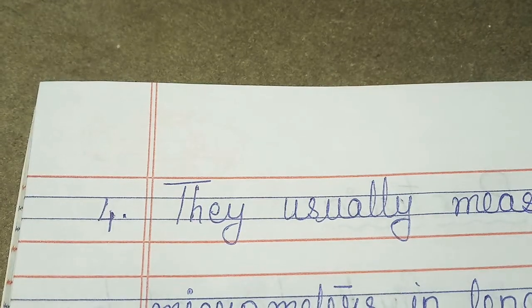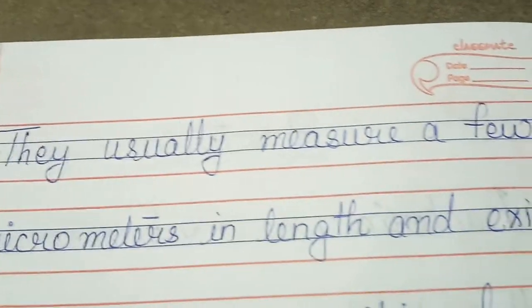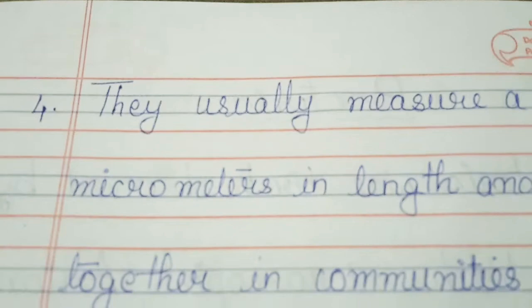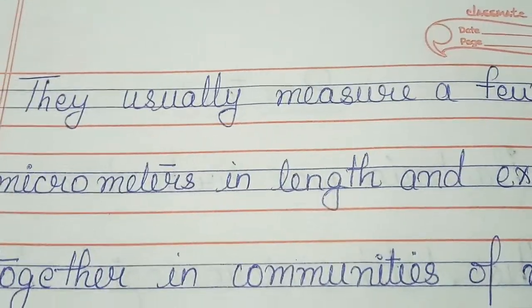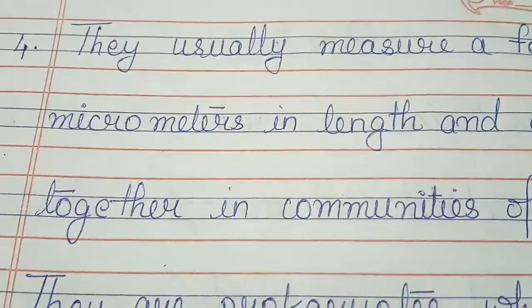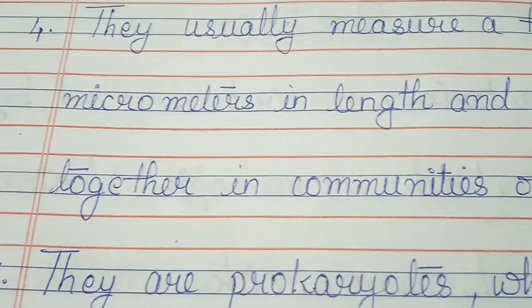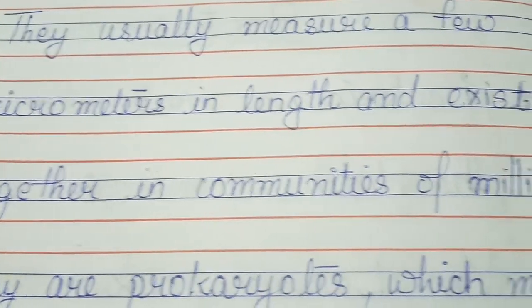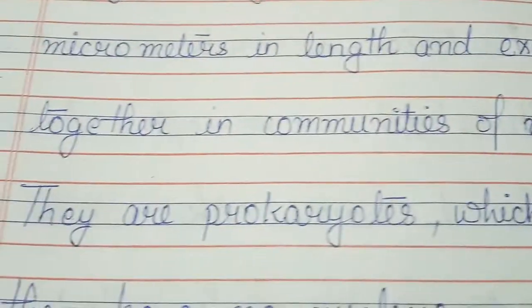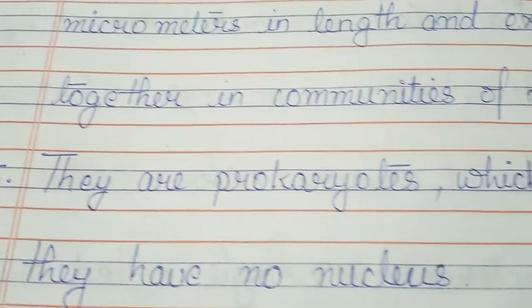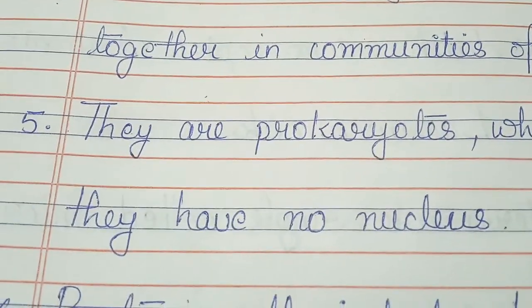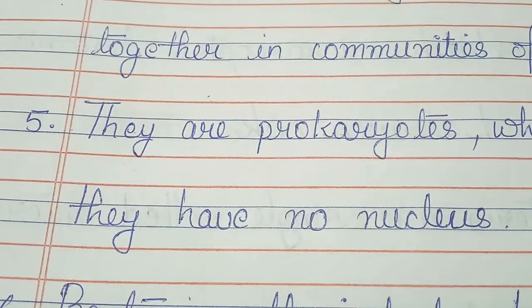They usually measure a few micrometers in length and exist together in communities of millions. They are prokaryotes, which means they have no nucleus.